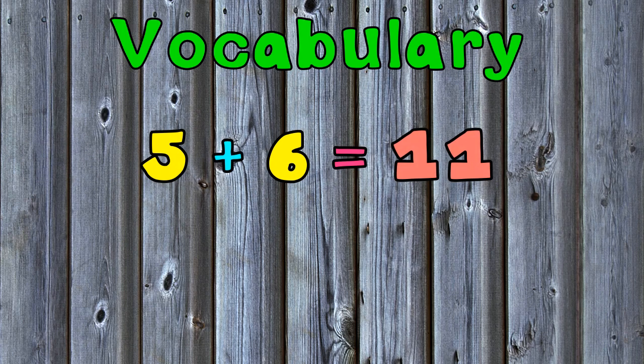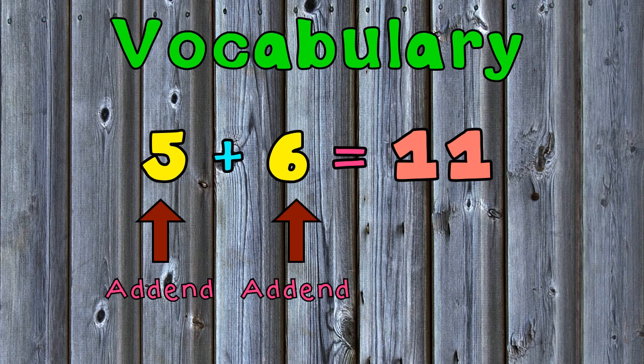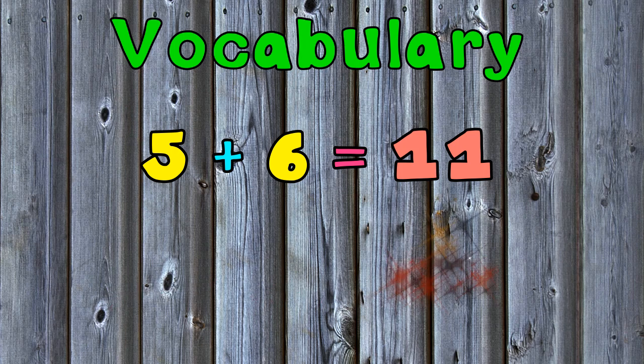In this addition sentence the 5 and 6 are the addends. Addends are the numbers that are added together. The last number in this addition sentence is 11. 11 is a sum or answer to the addition problem.